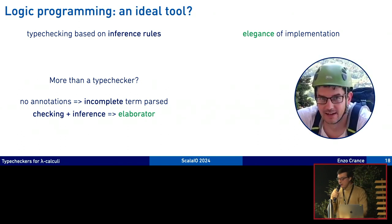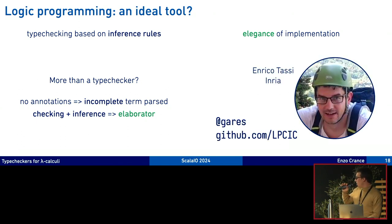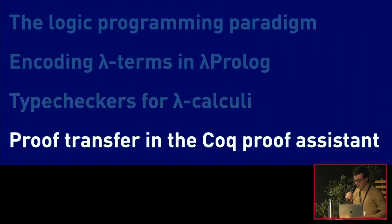It checks that the general shape of the term you gave is correct but it also tries to fill the remaining parts. So it's called an elaborator. This guy is Enrico Tassi, permanent researcher at INRIA, and he's the guy who implemented ELPI, the ELPI implementation of Lambda Prolog. And his ultimate goal is to build an elaborator for the Coq Proof Assistant, which is a much harder version of Lambda Calculus.